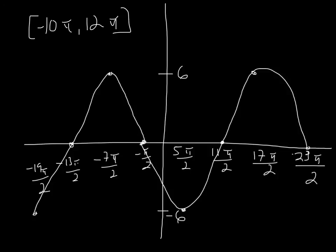So the zeros in the given interval would be here. It would be at negative 13π over 2, negative π over 2, 11π over 2, and 23π over 2. And those four points would be the answer.